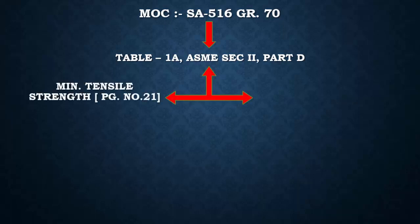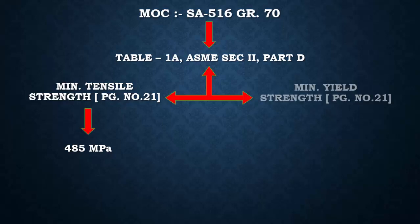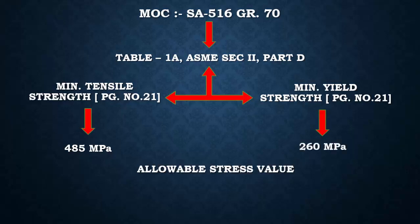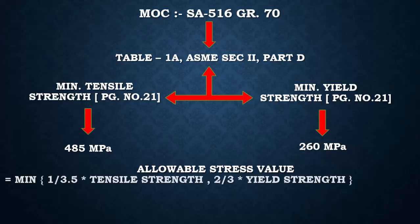In ASME Section 2 Part D, go to page 21, where you will find the minimum tensile strength for SA516 Grade 70 at room temperature, which is 485 MPa. On the same page, the minimum yield strength is 260 MPa. The allowable stress value is the minimum of one-third-point-five times the tensile strength and two-thirds of the yield strength.